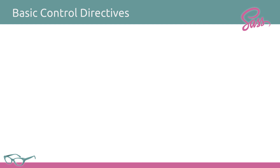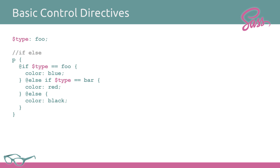The next thing you have are basic control directives. The most important ones are if, else if, and else. So if type is 'foo', you get blue; if type is 'bar', you get red; in all other situations, you get black. It's just like a normal if-then-else statement. This will compile to 'paragraph { color: blue; }'.